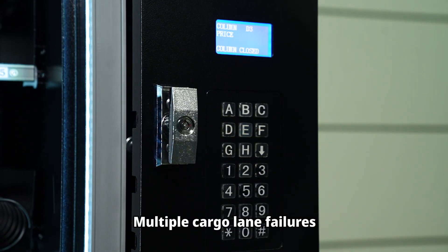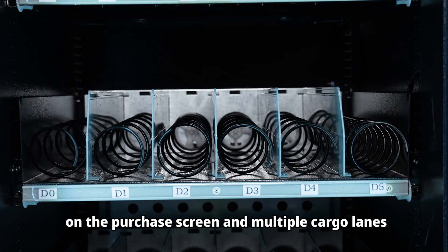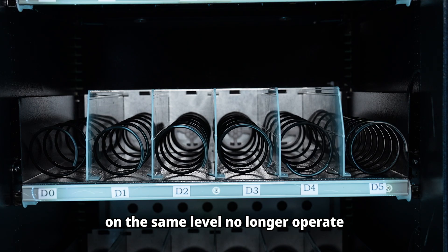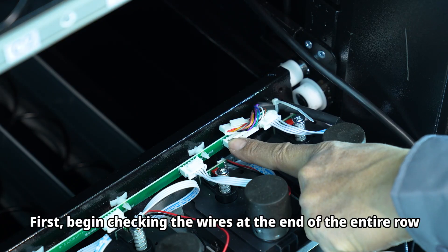Multiple cargo lane failures: When multiple cargo lanes report errors on the purchase screen and multiple cargo lanes on the same level no longer operate after entering the test, first begin checking the wires at the end of the entire row of the tray to see if they are in poor contact.